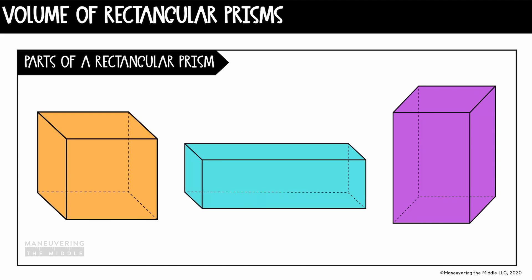Let's look at these. In the orange prism right here — this cube — we could label this part right here as one base, and this would be the other base because they're congruent and parallel. Then we could label the height as the distance between them. In the aqua prism, we could also consider this the base if we wanted, and here would be our second base, with the height being the distance between them. But I think it makes most sense to consider what the prism is sitting on top of. So in the purple one, I'll consider these two the base, and I will label this as my height because it's the distance between both of the bases.